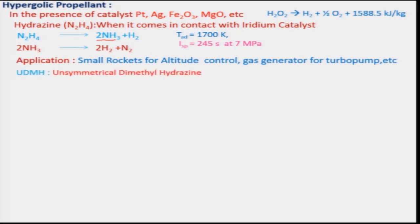Unsymmetrical dimethylhydrazine (UDMH) and RFNA (red fuming nitric acid) is being used in India and other places due to its higher performance and easy availability.